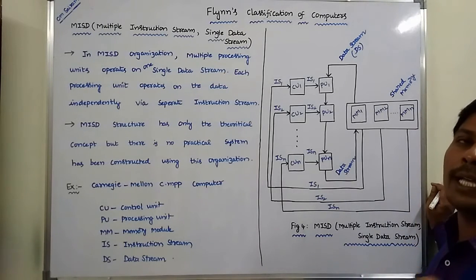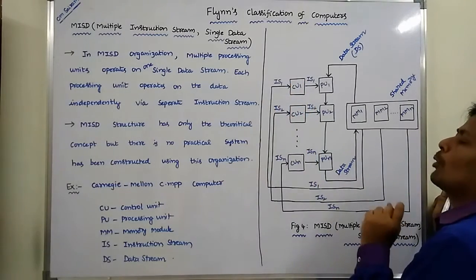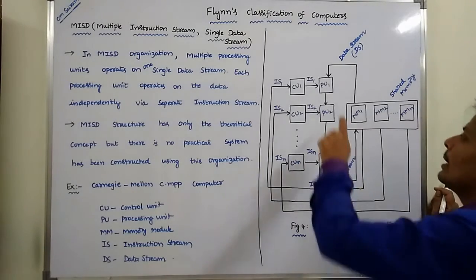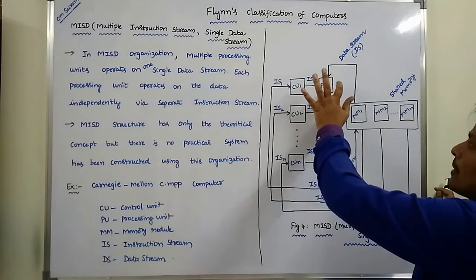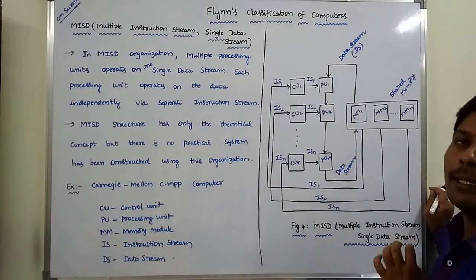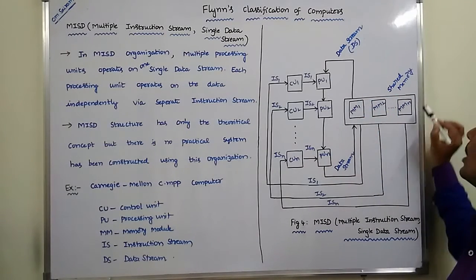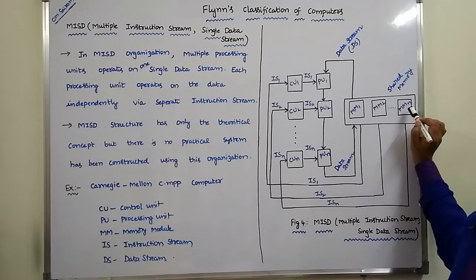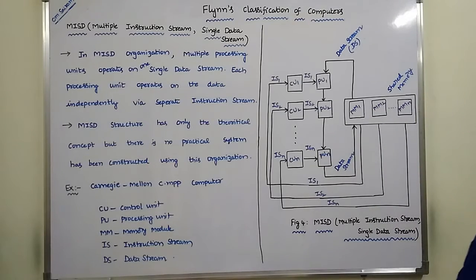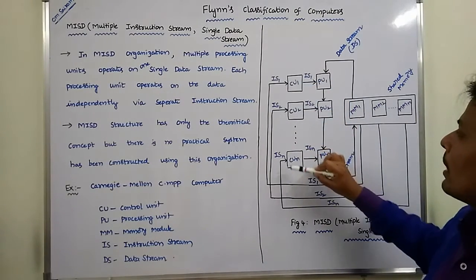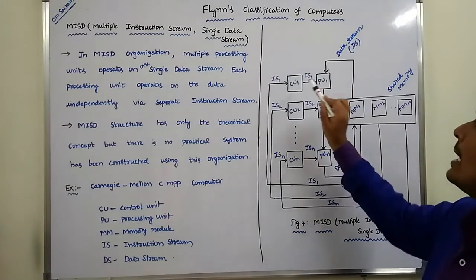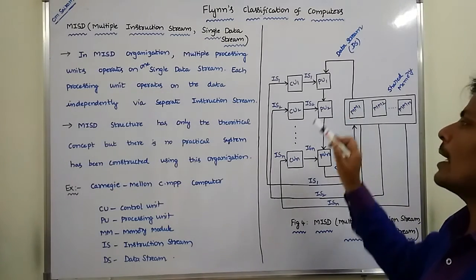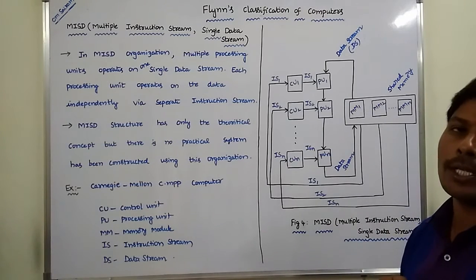In the MISD computer, it consists of n number of control units — control unit 1 to control unit n — and n number of processing units — processing unit 1 to processing unit n — and one shared memory unit. This shared memory unit is divided into n number of memory modules: MM1, MM2, through MMn. Each and every control unit can read the instructions from the corresponding memory module as an instruction stream.